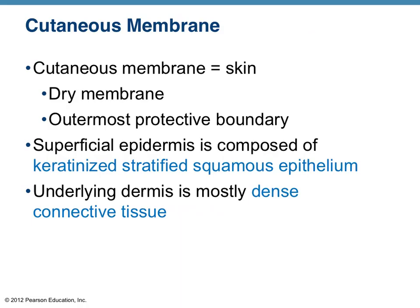The first membrane, probably the most recognizable, is called the skin, otherwise known as the cutaneous membrane. It's the outermost boundary of the body. It's special in that it is composed of a stratified squamous epithelium that is keratinized. Keratin is a hardening protein that makes the dead outermost layer of epithelial cells in your skin a very good boundary — essentially waterproof and protective of underlying tissue.